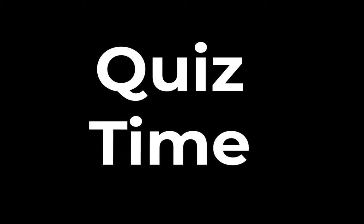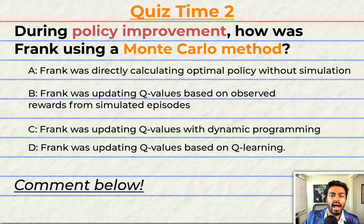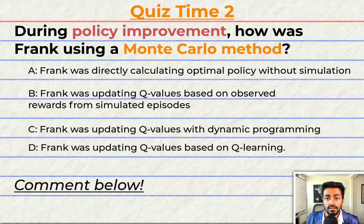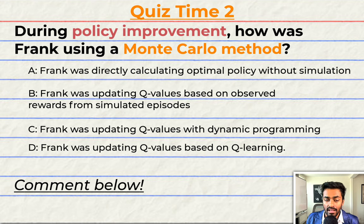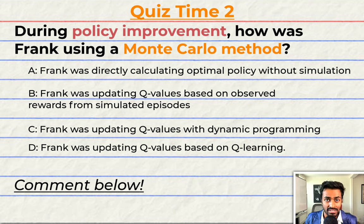Quiz time! Welcome back to another edition of Quiz Time. During policy improvement, how was Frank using a Monte Carlo method? Was it: Frank directly calculating the optimal policy without simulations; Frank updating Q-values based on observed rewards from simulated episodes; Frank updating Q-values with dynamic programming; or Frank updating Q-values based on Q-learning? Comment your answer and reasoning below.